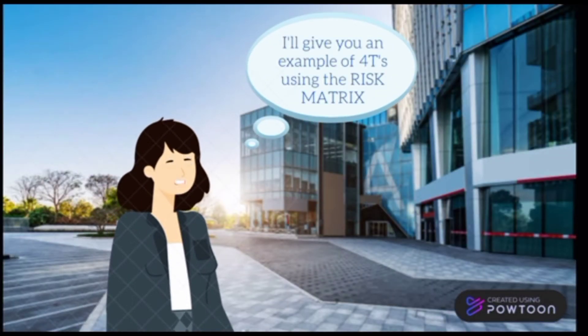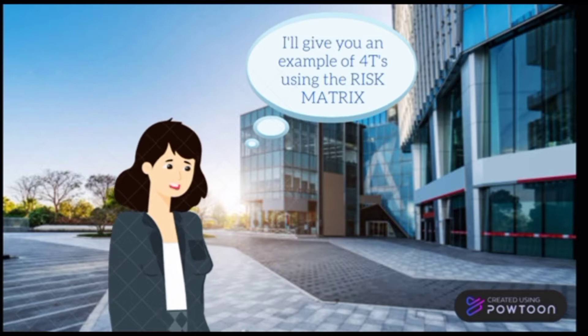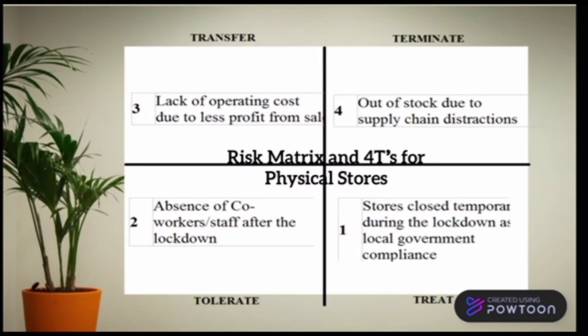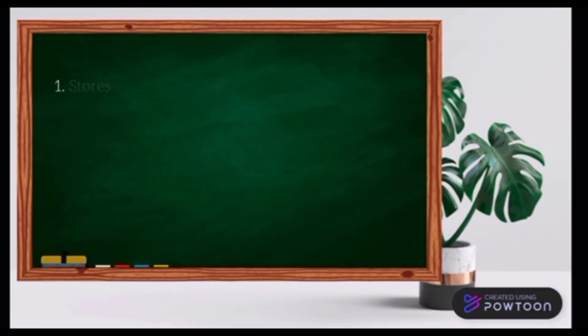Now I'll give you an example of the 4Ts using a risk matrix. Our example is a risk matrix in 4Ts for physical stores. I will discuss these 4Ts with risk measures. Under the first category — Threat — stores close temporarily during the lockdown as local government compliance.